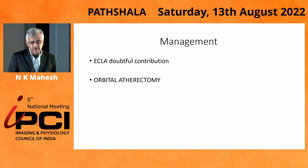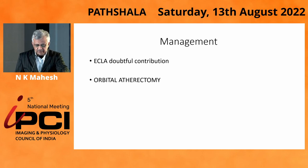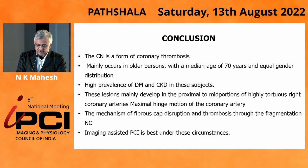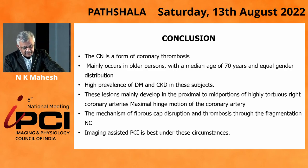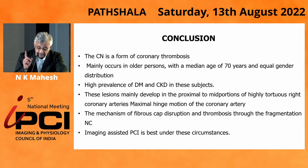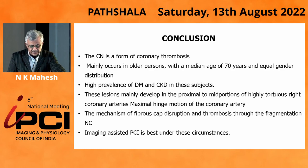Orbital atherectomy has been proposed, but there is very little published experience. When it comes to India, we will look into it and decide. Calcified nodule is a form of coronary thrombosis, although rare at 5 to 7%. It mainly occurs in older persons with a median age of 70 years, with no gender bias, and a high prevalence of diabetes and CKD. It is predominantly in the RCA and bad bends. Lesions develop in proximal and mid portions where there is a bend and sheets of calcium, and between them is where the nodule develops and breaks. Imaging-assisted PCI is the best strategy.